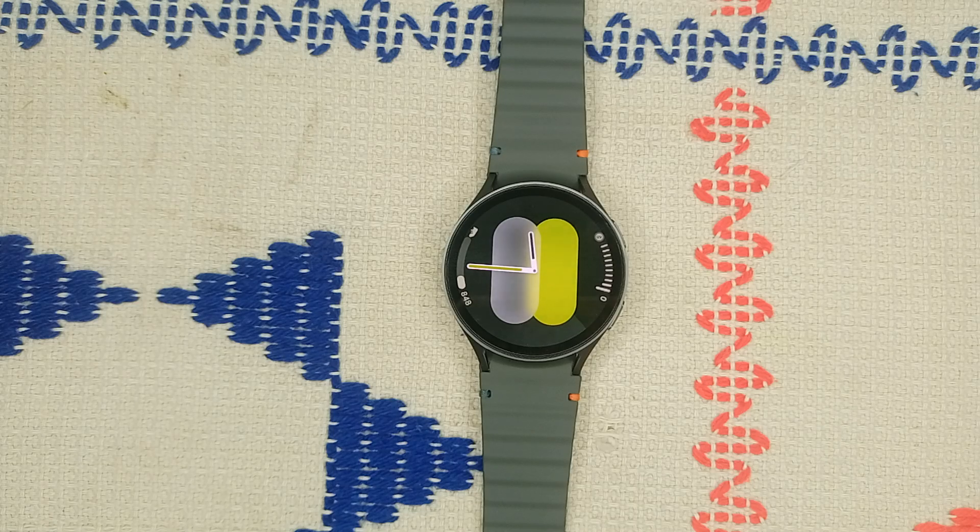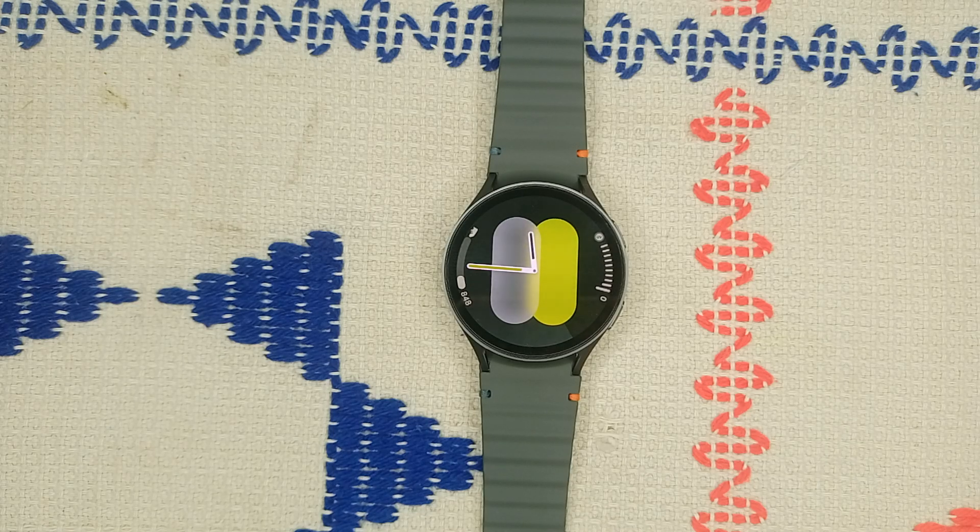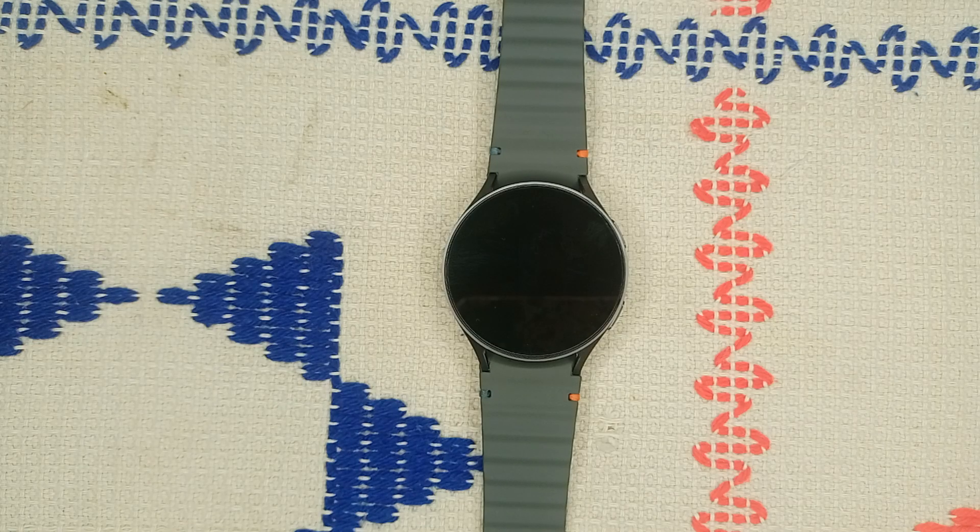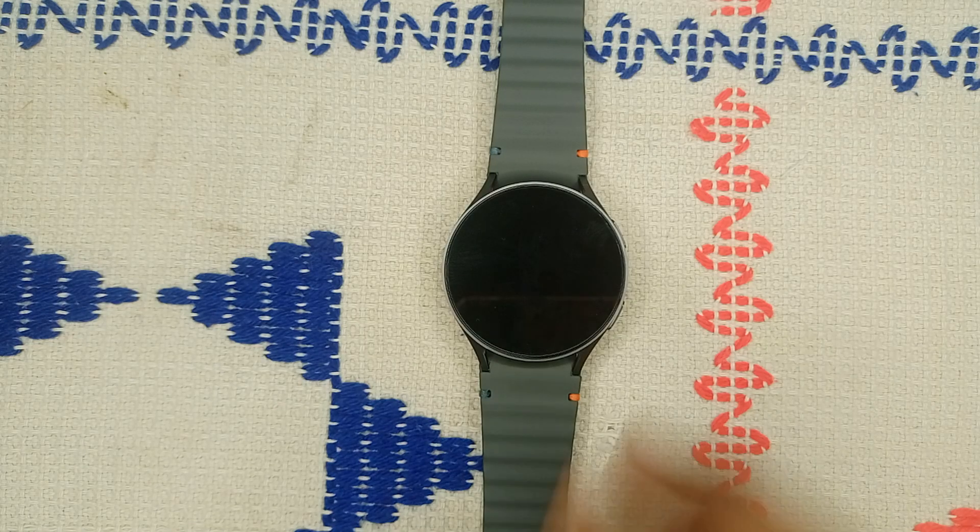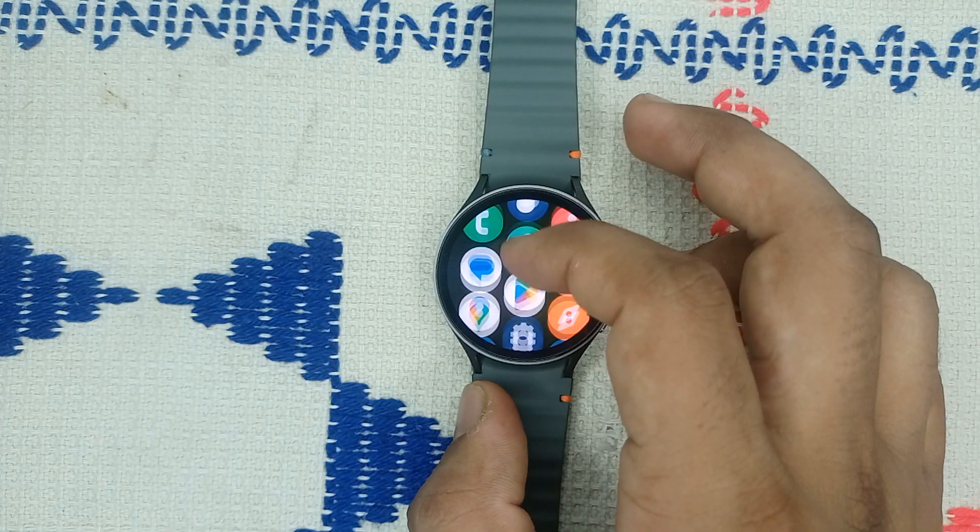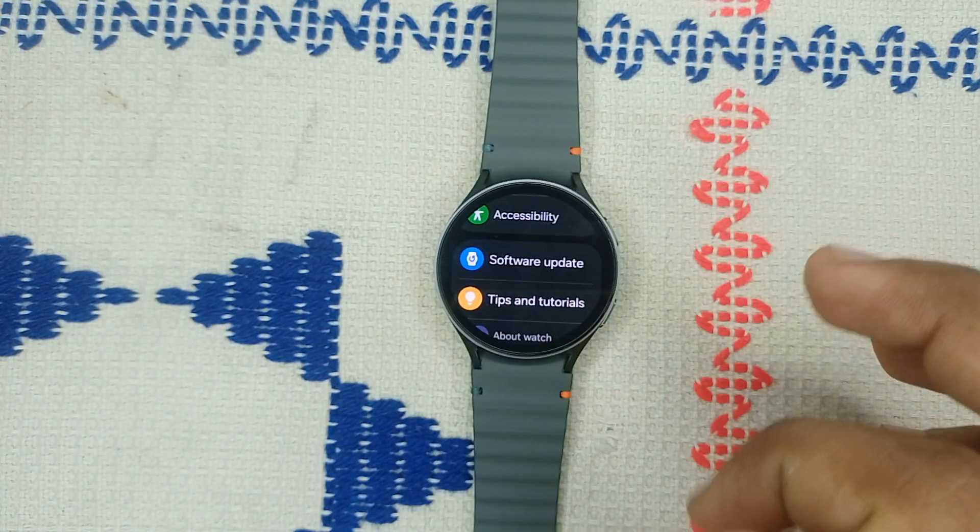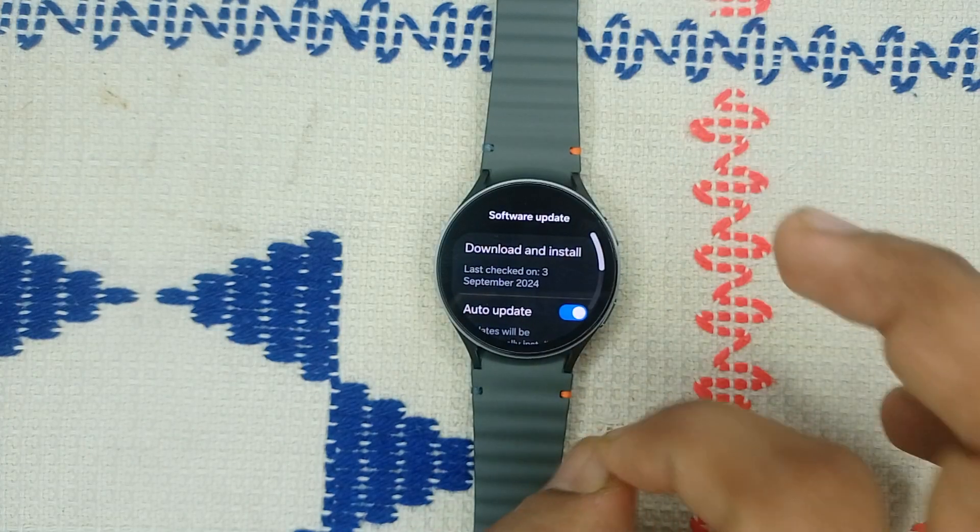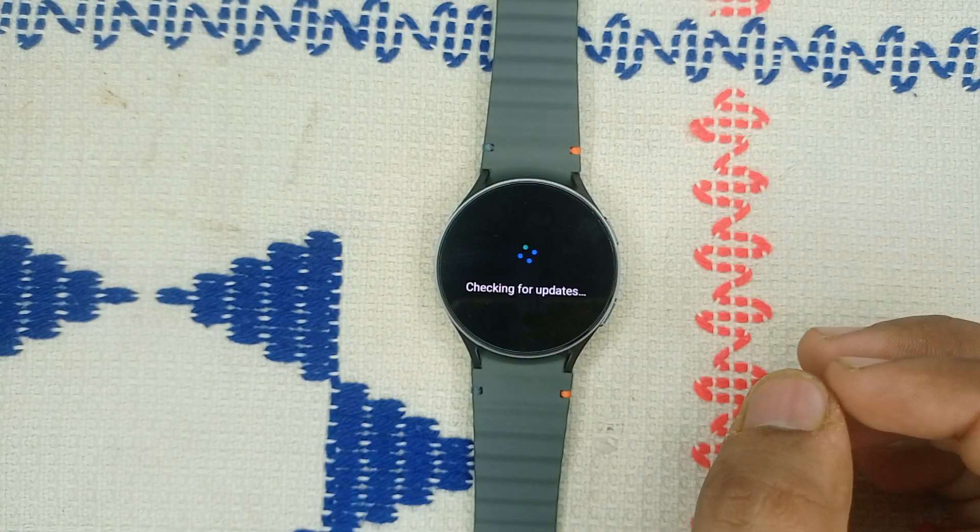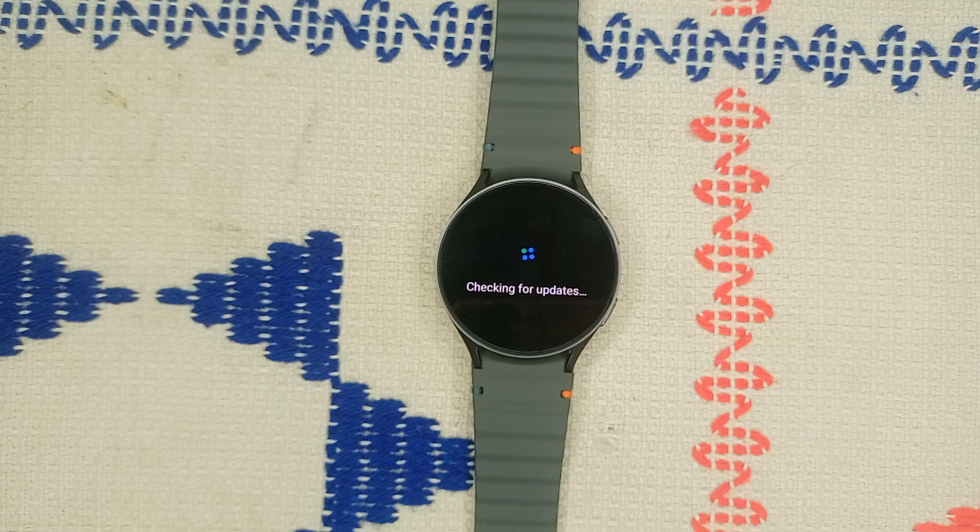Step 2: Check for software updates. Make sure your watch and your phone are running the latest software. You can check for software updates from your watch by going to Settings, clicking on Software Update, then click Download and Install. You can do the same thing with your phone to download the latest version.